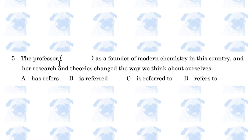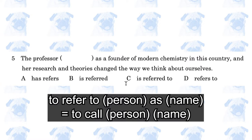The professor blank as a founder of modern chemistry in this country, and her research and theories change the way we think about ourselves. The answer is C, the professor is referred to as a founder. To refer to someone as something is to call someone something. This sentence is in the passive voice, so you need the verb 'is.'